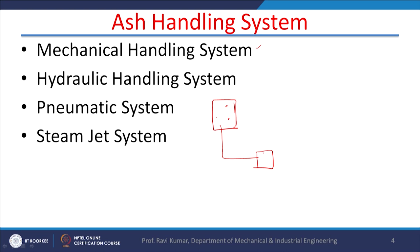The ash goes to the ash pit or ash bunker, and may be transported by truck or railroad for dumping or further use. The main ash handling systems are: mechanical handling system, hydraulic system, pneumatic system, and steam jet system.